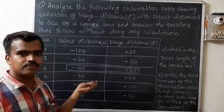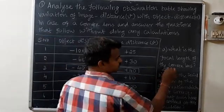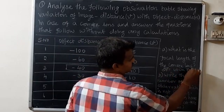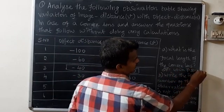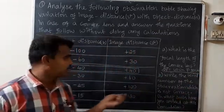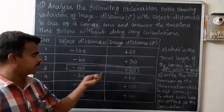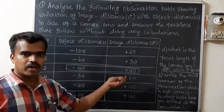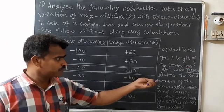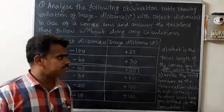So 2f is 40 centimeter, therefore f is equal to 20 centimeter. Why 2f? Yes, when the object is located at 2f1, the image is also produced at 2f2, according to the image formation table for convex lens. So f becomes 20 centimeter.